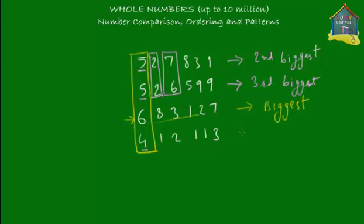Since 527831 is the bigger of the two remaining numbers, 526599 becomes the smaller one — that's the third biggest number. All that's left is 412113, which becomes the smallest. So we've compared four numbers and found the biggest, second biggest, third biggest, and the smallest.